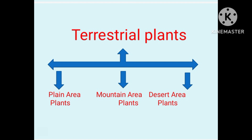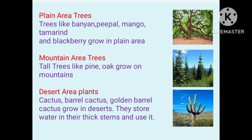Mountain area plants and plain area plants are different. The trees like banyan, peepal, mango, tamarind, and blackberry grow in plain areas.